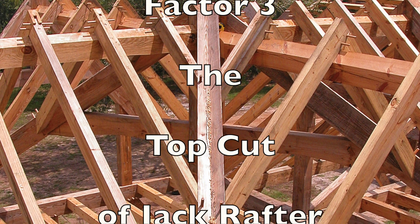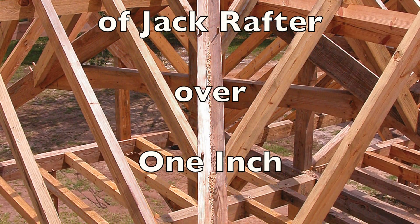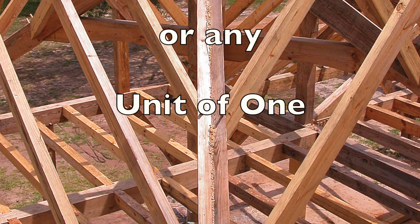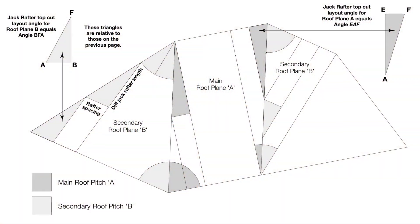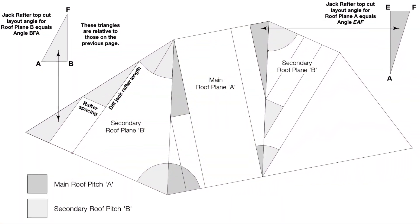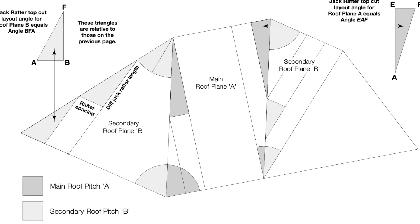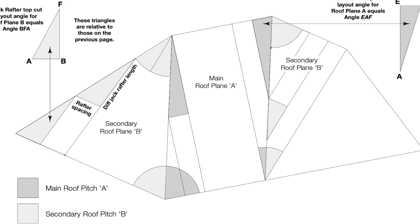Factor 3: the top cut of jack rafter over 1 inch. A jack rafter is a rafter in the common pitch that intersects the hip or valley rafter short of its full length. This may be from the plate to the hip or valley, or from the hip or valley to the ridge.